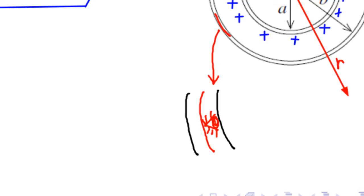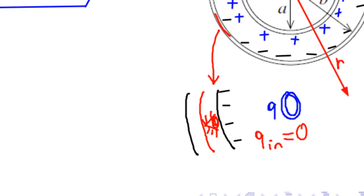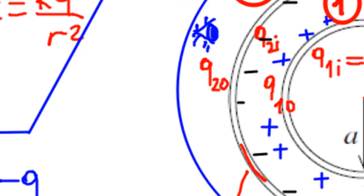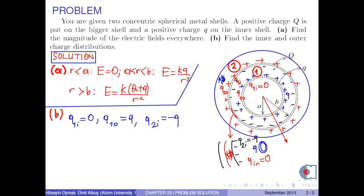For shell 2, if we draw a Gaussian surface inside the shell and look around this region — since there is no charge inside this region according to the shell theorem, and because the outer charge distribution of shell 1 is positive Q — then the inner surface of shell 2 is deposited by charge negative Q. Finally, if we draw a Gaussian surface enclosing shell 2 and look inside, we see a positively charged outer surface. In other words, the outer charge distribution of shell 2 is the total charge of the system, that is, capital Q plus Q.